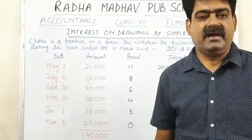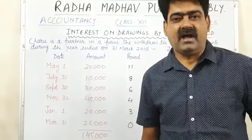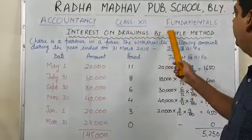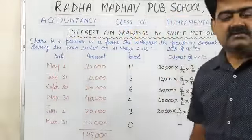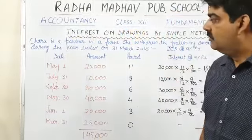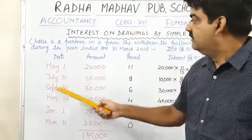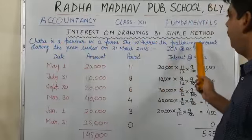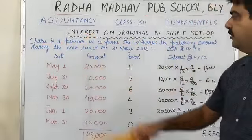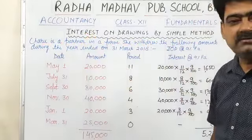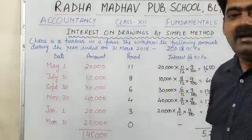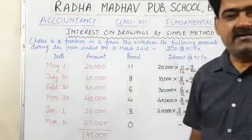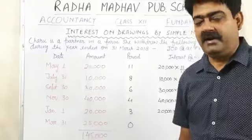Good morning, dear students. Today in Accountancy class, we will learn how to calculate interest on drawing by simple method. I have taken one question. That is, Charu is a partner in a firm and she withdrew the following amounts during the year ended on 31st March 2018. And we have to calculate interest on drawing at the rate of 9% per annum.